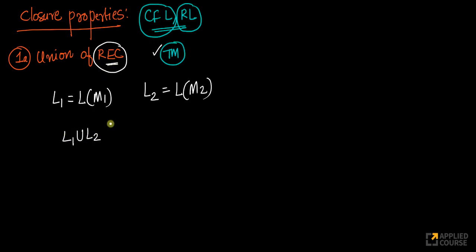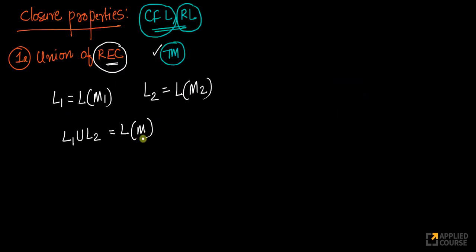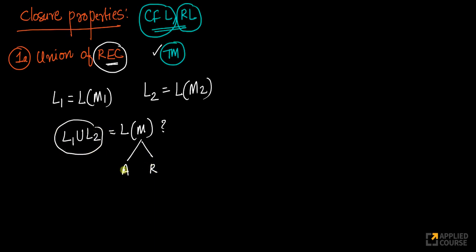For L1 union L2 to be recursive, there should be only two possibilities for the corresponding machine — no infinite loop. We need a machine such that L1 union L2 is accepted, where the machine only accepts or rejects. Since L1 is recursive, M1 has only two possibilities: accept or reject, no infinite loop. Same for M2.